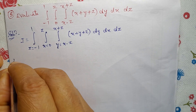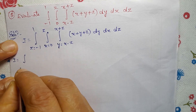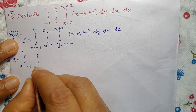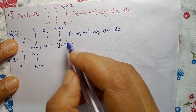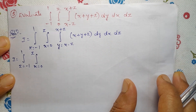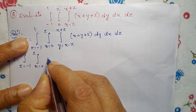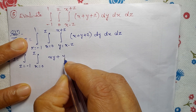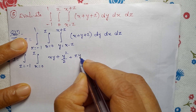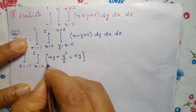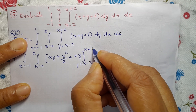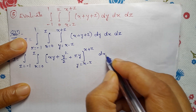I equals integral of Z from minus 1 to 1, then integral of X from 0 to Z, then integral of Y from X minus Z to X plus Z, of X plus Y plus Z dy. Integrating with respect to Y gives XY plus Y squared divided by 2 plus ZY, with limit Y equal to X minus Z to X plus Z. Then dx dz.